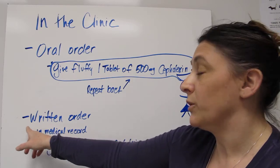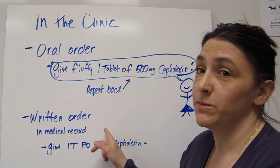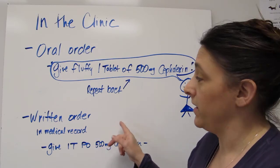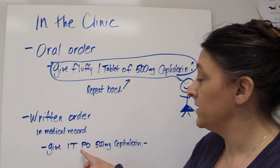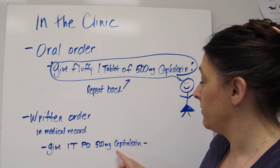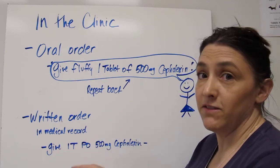They can also do a written order and this is usually in the medical record though sometimes it may be on a medication sheet and basically this says give one tablet PO 500 milligrams of Cephalexin. So this is telling you to give that tablet.